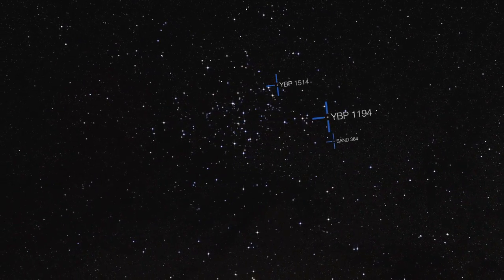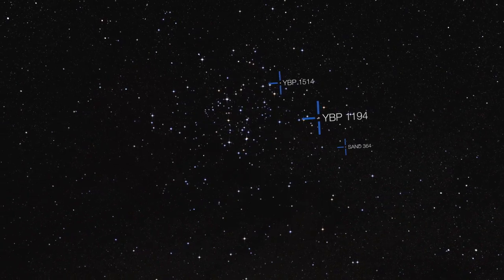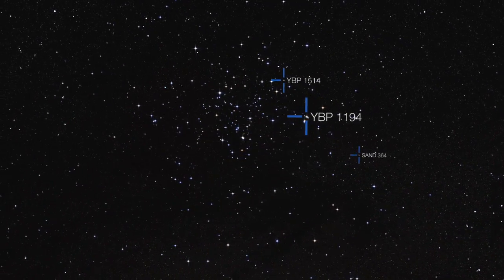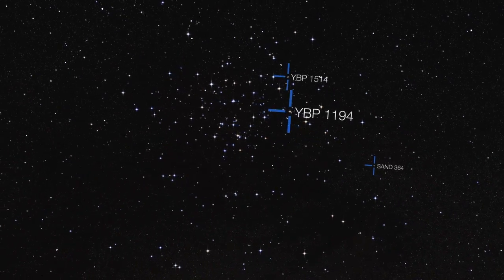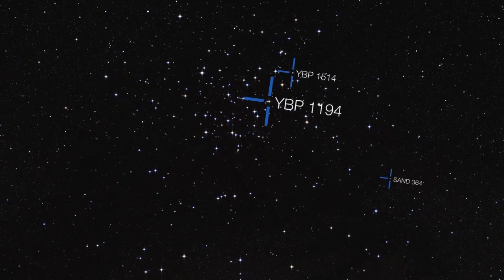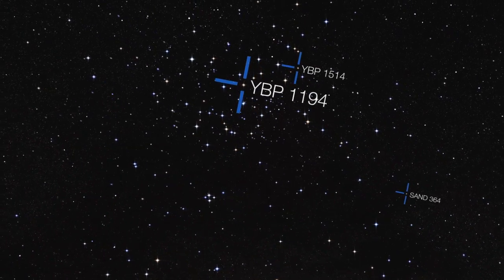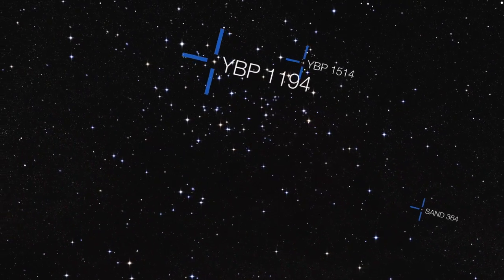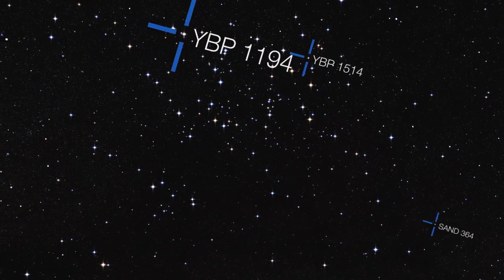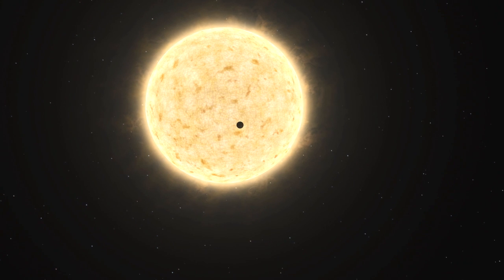Astronomers using ESO telescopes and others around the world have found three new planets orbiting stars in a cluster called Messier 67. Only a handful of such planets in clusters were known up to now, and surprisingly,